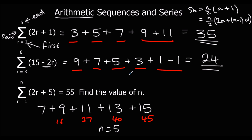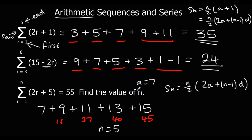We could also have used the sum formula — it would give us a quadratic to solve. Let's have a look at doing that. So Sn equals n over 2 times (2a plus (n minus 1) times d), and we know a is seven and the difference is two. You may have to work out the first few terms to figure that out. The coefficient of r is the difference — like the nth term. The sum is fifty-five.